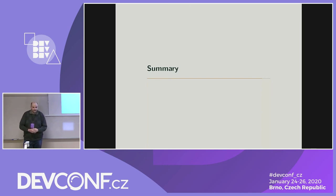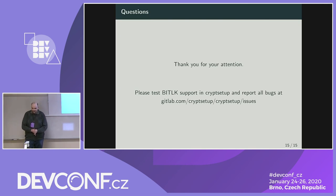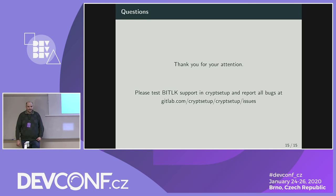In summary: you can now use BitLocker devices in Linux. All you need is cryptsetup 2.3 or newer. For older BitLocker versions you also need a newer kernel, but for the latest BitLocker from Windows 10, cryptsetup 2.3 is enough. Please test BitLocker support in cryptsetup and report all bugs you find. There are some subtle differences in metadata versions — two months ago a Windows 10 update added new properties to the metadata that confused cryptsetup, so there may be issues with different Windows versions.